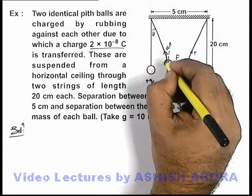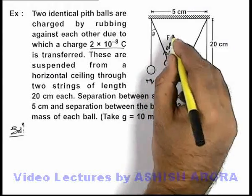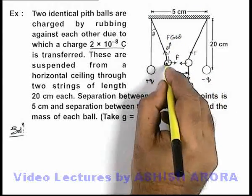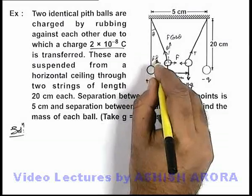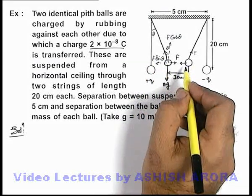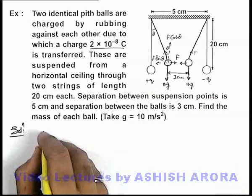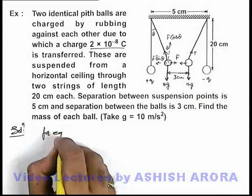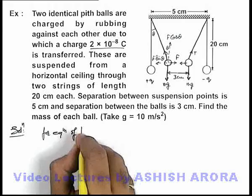The horizontal force acting on the bob will be F sin theta. A similar free body diagram can be drawn for the other ball also, and in this situation we can write for equilibrium of the balls.